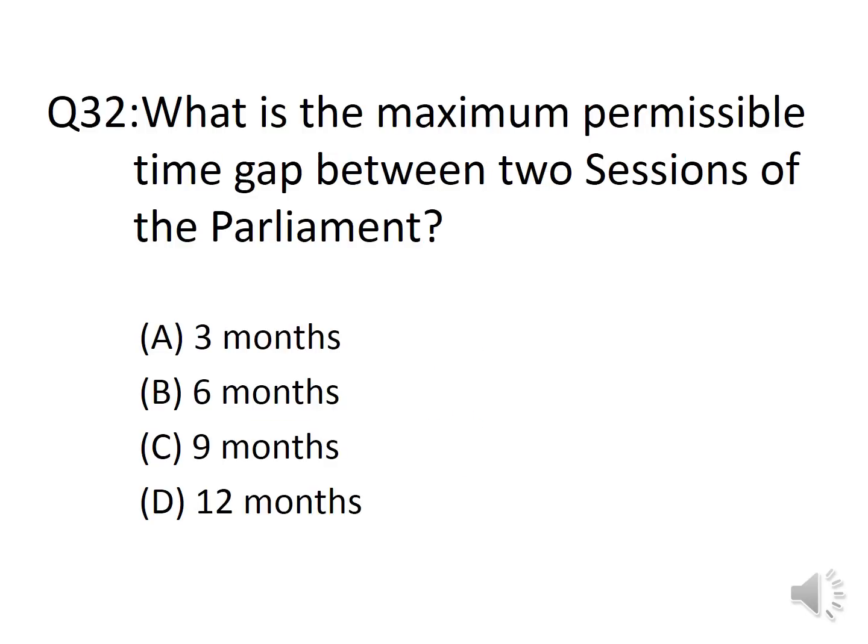Question 32: What is the maximum permissible time gap between two sessions of the Parliament? Options: A. 3 Months, B. 6 Months, C. 9 Months, D. 12 Months. The answer is Option B, 6 Months. The maximum permissible time gap between two sessions of the Parliament is 6 months.